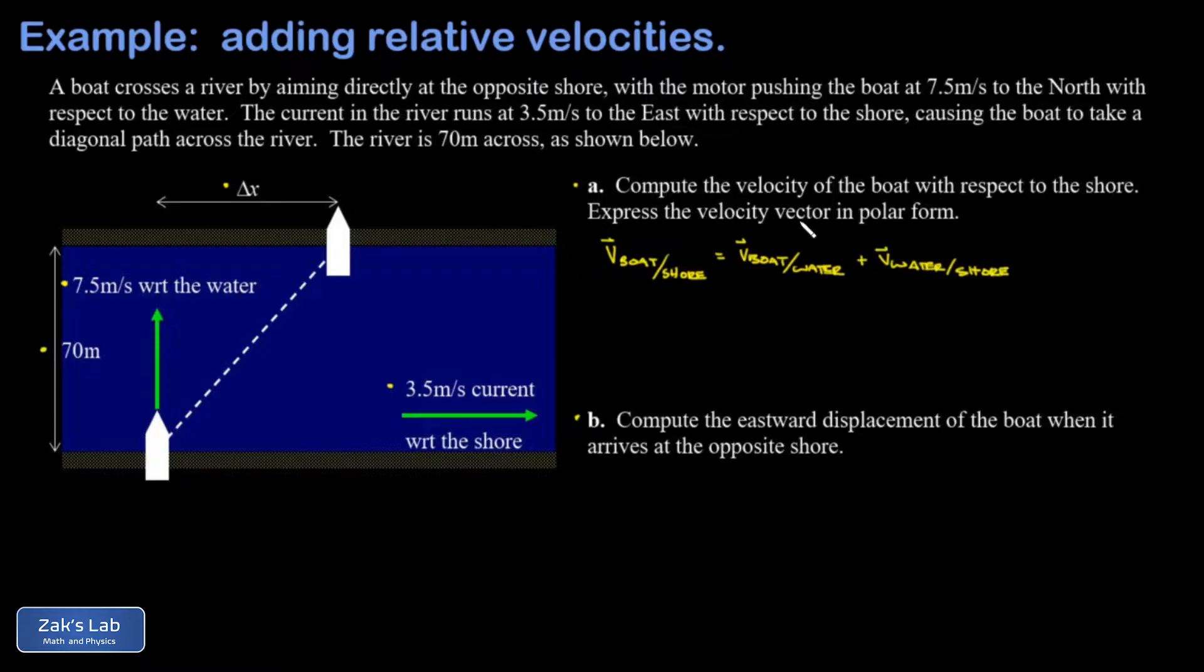The velocity of the boat with respect to the water, that's 7.5 meters per second pointed to the north. The velocity of the water with respect to the shore, that's 3.5 meters per second pointed to the east. So to vector add these we're going to need a triangle. I've got my 7.5 meters per second to the north, my 3.5 meters per second to the east.